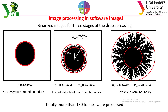The slide shows an example of a binarized image of a free stage of drop spreading. The critical stability radius is the size where the drop begins to lose its round shape. It was calculated using the radii of the inscribed and circumscribed circles, as shown on the slide. In total, more than 150 frames were processed.